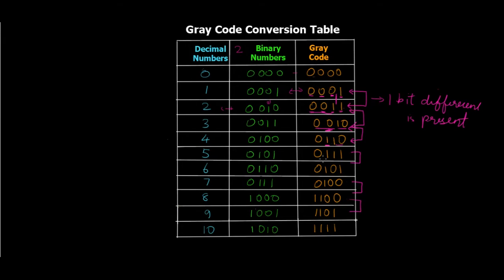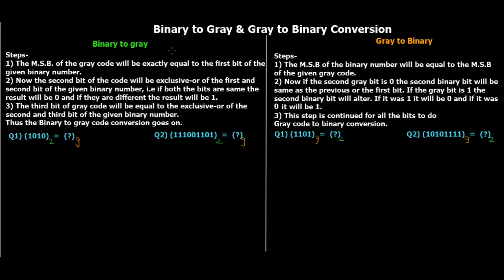You might be wondering: these are some values that can't be directly converted to decimal — so how are we supposed to find those numbers? There is a technique for conversion from binary to gray code and vice versa, so let's go ahead and see those conversion techniques.